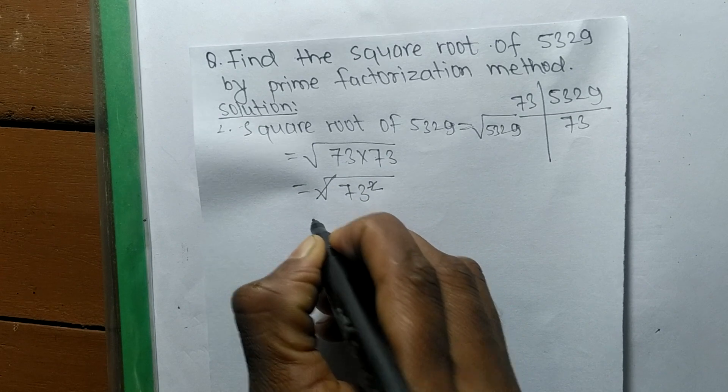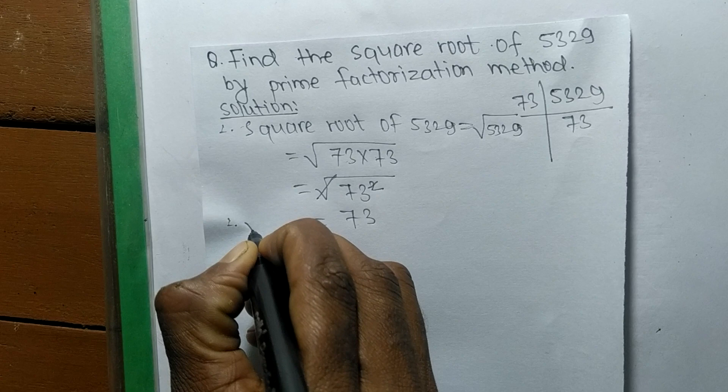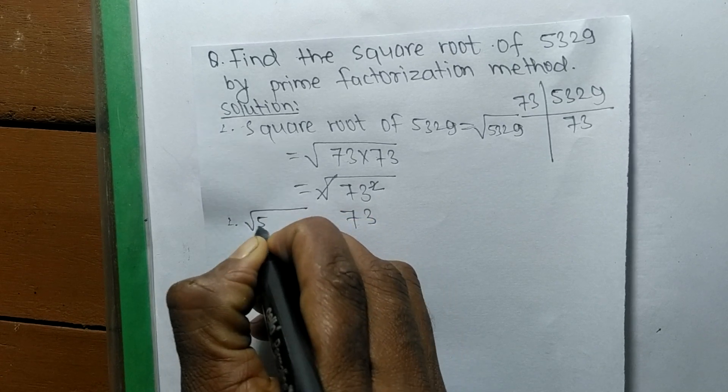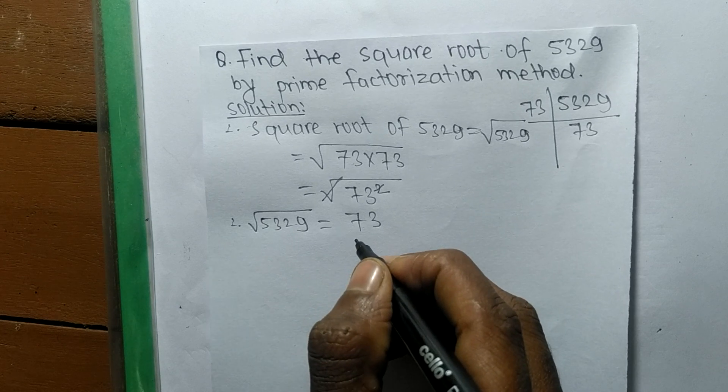Square and square root cancel each other, so the number is 73. Therefore, the square root of 5329 is 73.